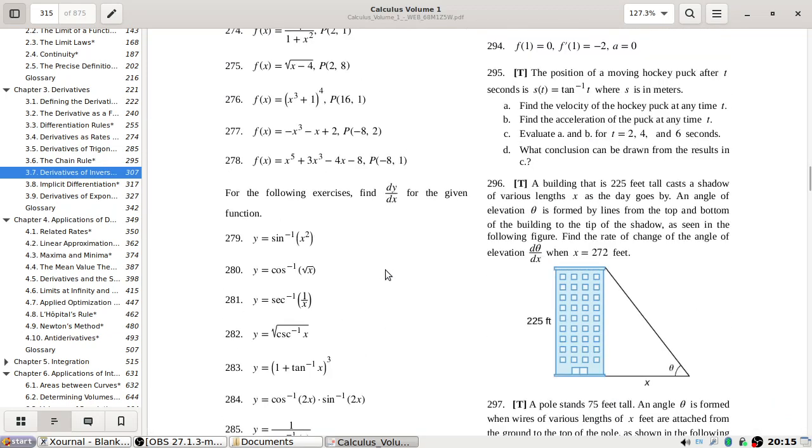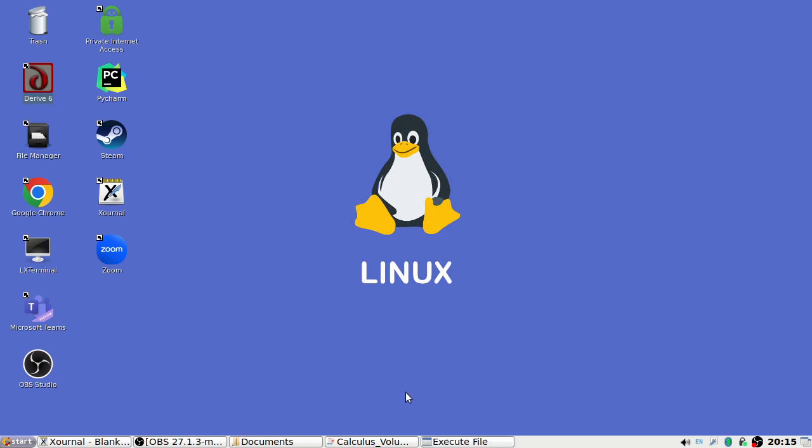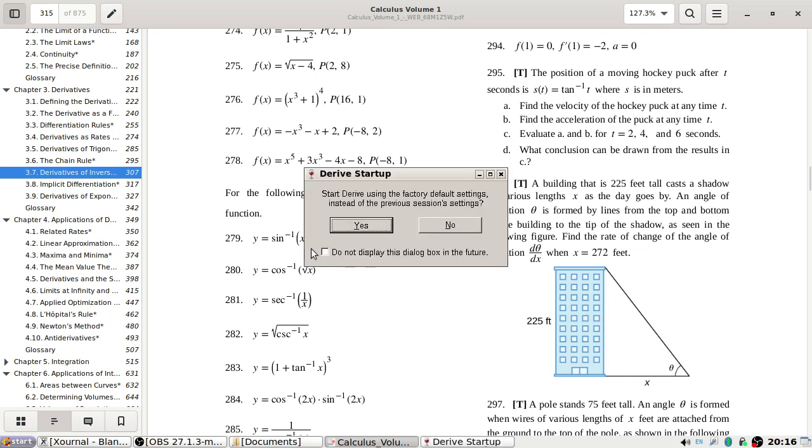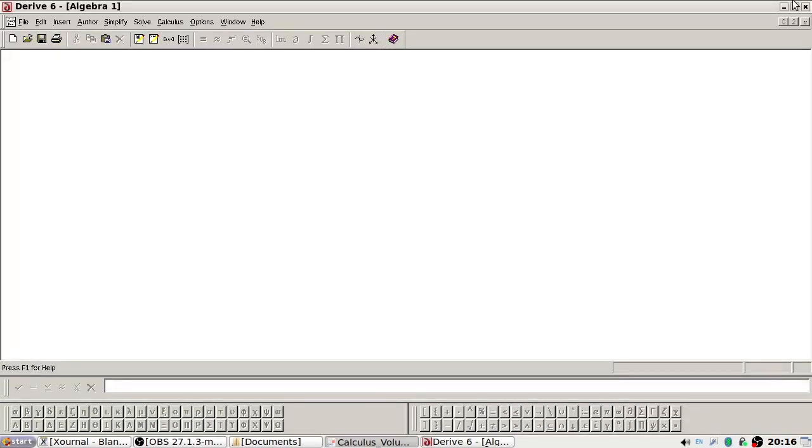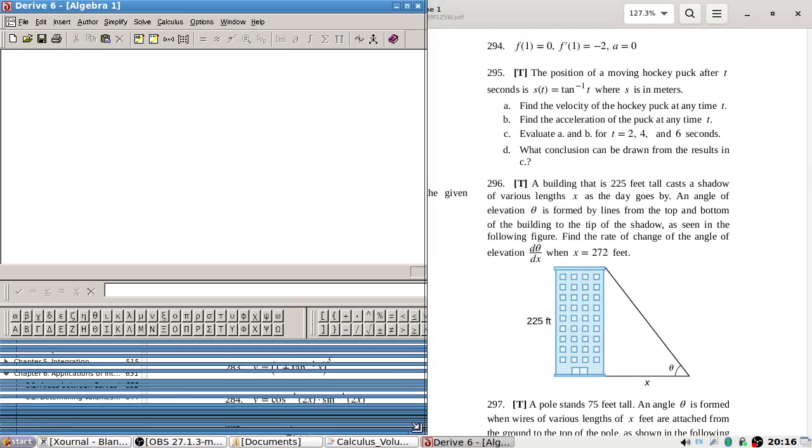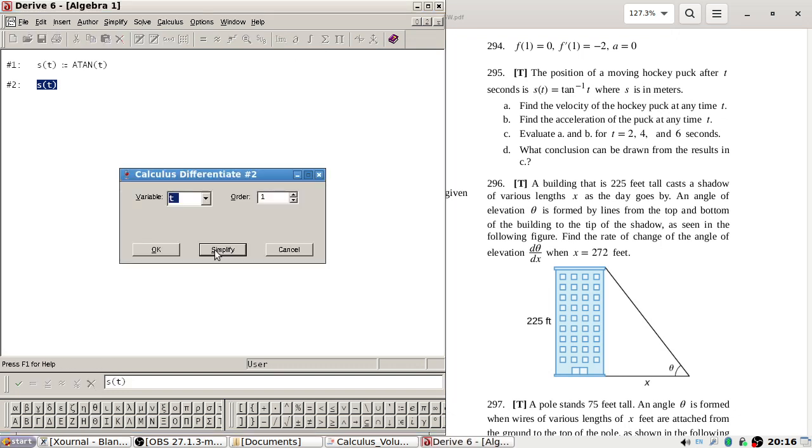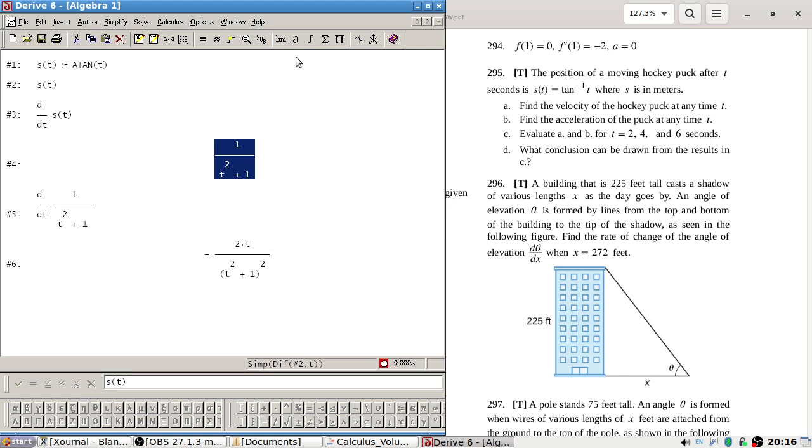Some tech questions now. The position function is defined as arctan inverse t. Find the velocity. Okay, well that's just the derivative. There you go. Find the acceleration. Right, that's the derivative again. Oh, and then calculate for 2, 4, and 6.